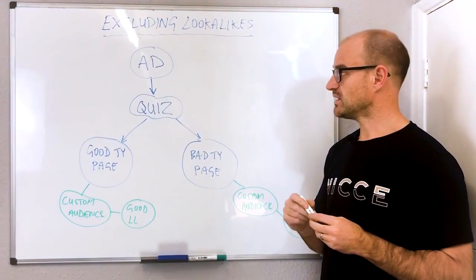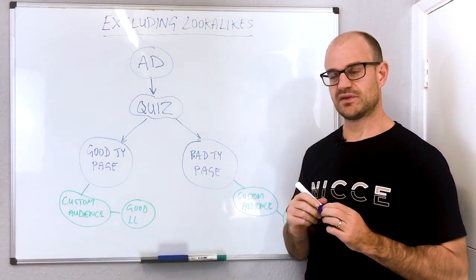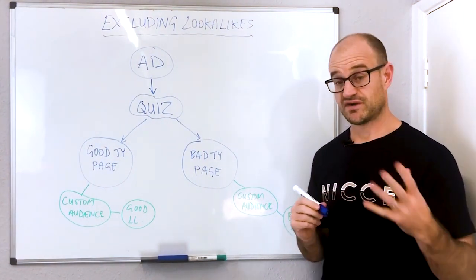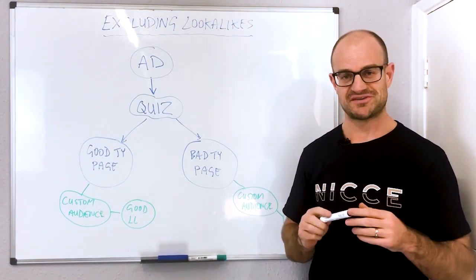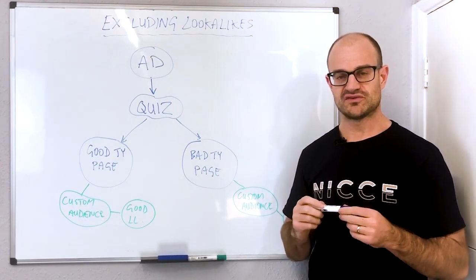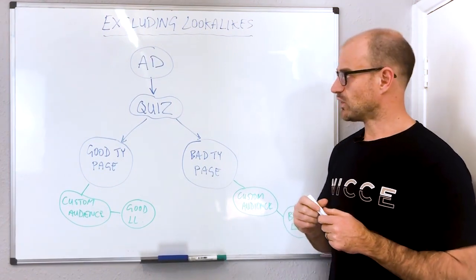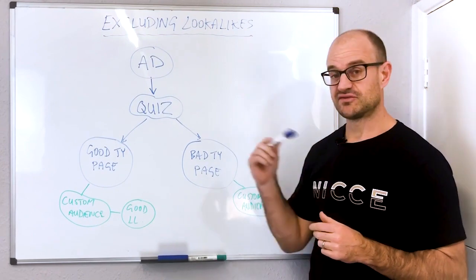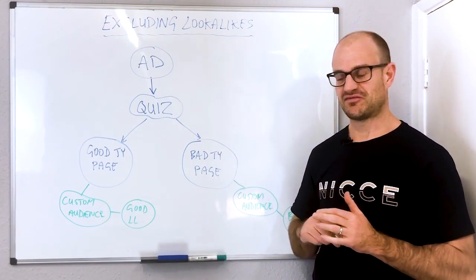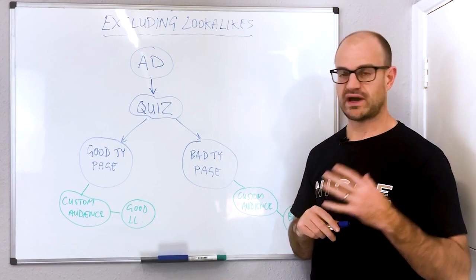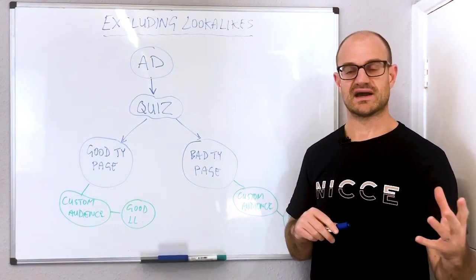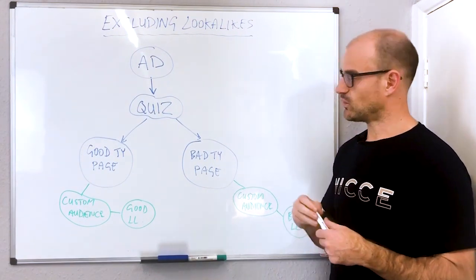What we're talking about here is something that's pretty funky actually. One of my students taught me this about a week ago, which is kind of cool. What he was talking about was excluding look-alike audiences from your targeting on the Facebook platform, and the way it works is this.